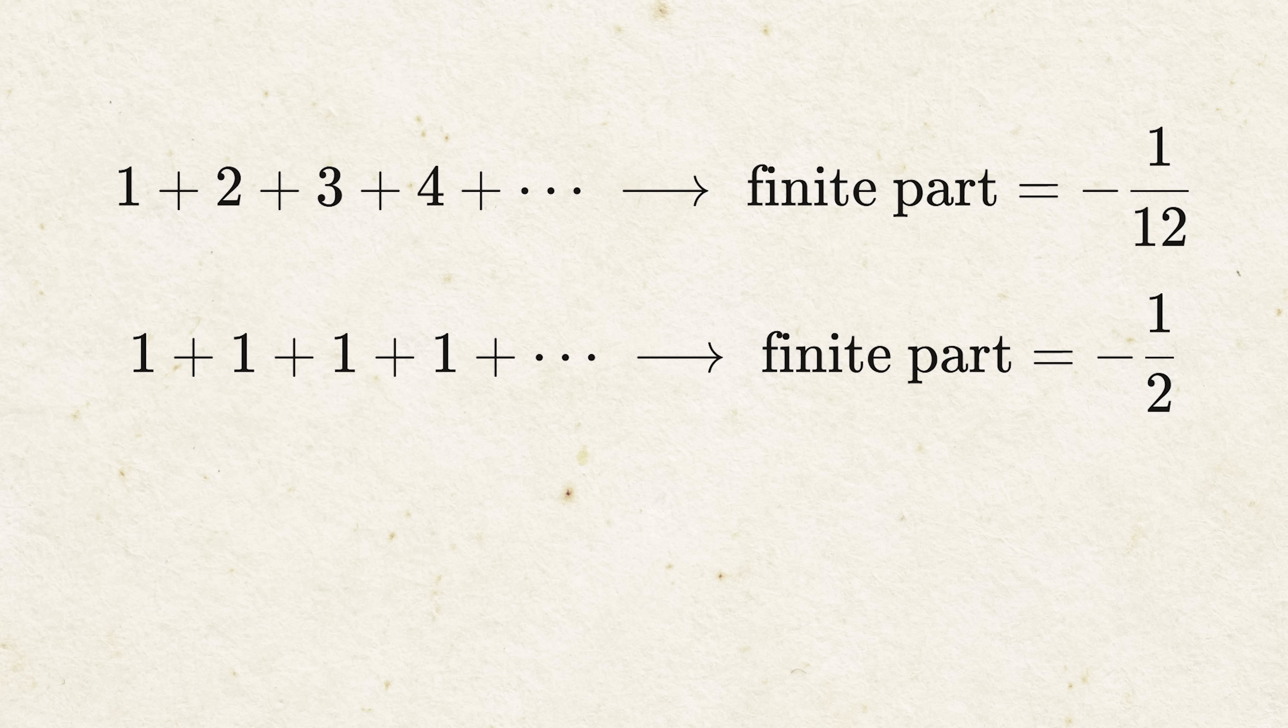If you use some other random infinite sum, like 1 plus 1 plus 1 plus 1, you find out that you get another leftover part. In this case, it's negative 1 half. So there are these finite parts that we can extract from infinite sums. So this is all cool mathematics, but where do we ever see real infinite summations like this in real life?